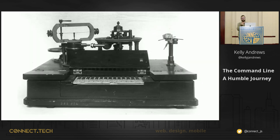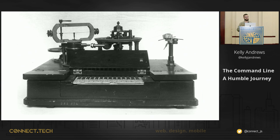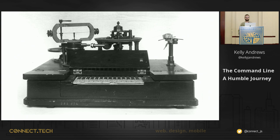House's printing telegraph used a piano-style layout for the letters. It had 28 keys and a 56-character type wheel. The type wheel was synchronized between two stations, so as you typed into one, the other would fire up and start creating the same output.